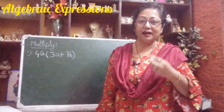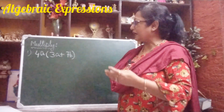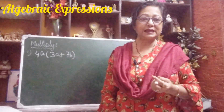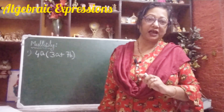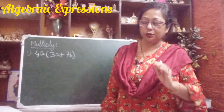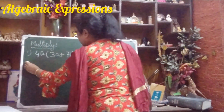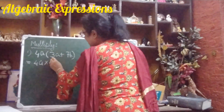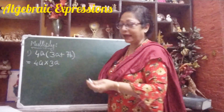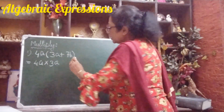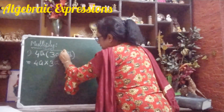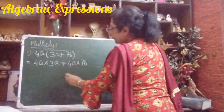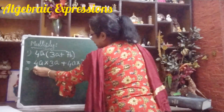The first example is: we will multiply 4a with 3a plus 7b. You know the distributive law — the distributive law of multiplication over addition. We will apply the same here. First, we will multiply 4a with 3a, then since there is a plus sign, we put plus, and again we multiply 4a with 7b.